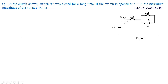We will go with the first problem which was asked in GATE 2023 for ECE paper for one mark. In the circuit shown, the switch S was closed for a long time. If the switch is open at t equal to zero, the maximum magnitude of the voltage Vr is to be determined.